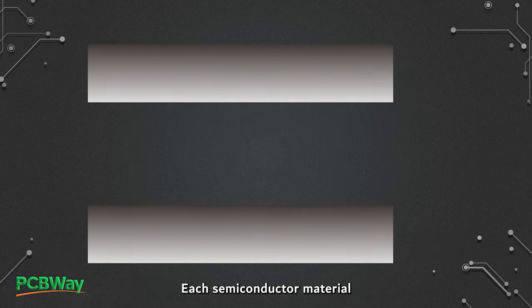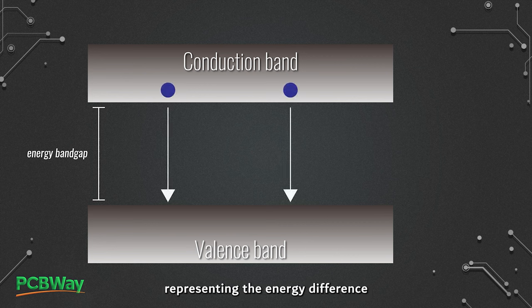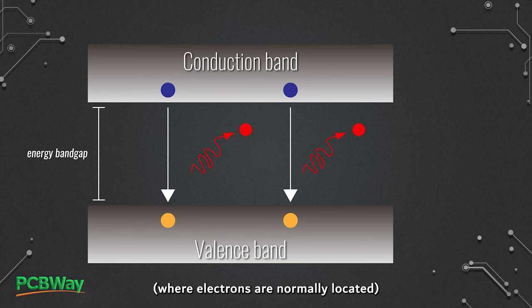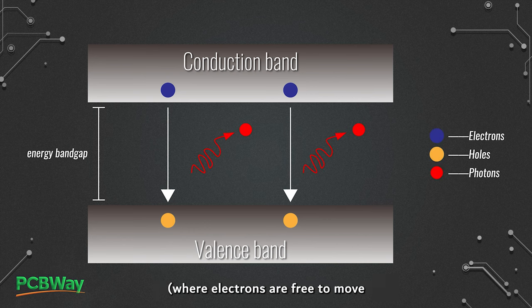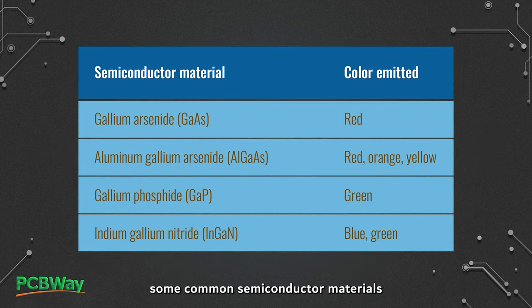Each semiconductor material possesses a unique energy band gap, representing the energy difference between the valence band — where electrons are normally located — and the conduction band, where electrons are free to move and participate in electrical conduction. The following table shows some common semiconductor materials used in LEDs and the colors of light they emit.